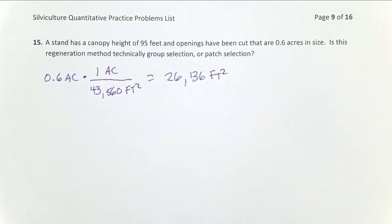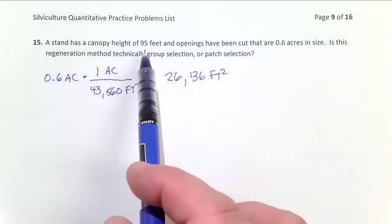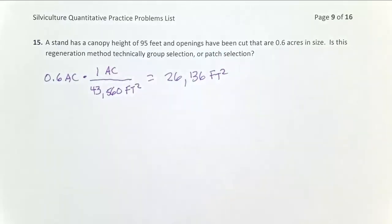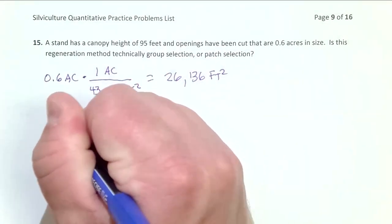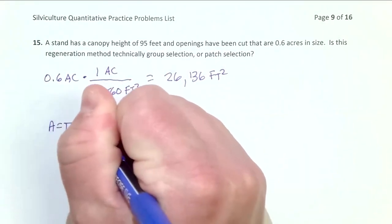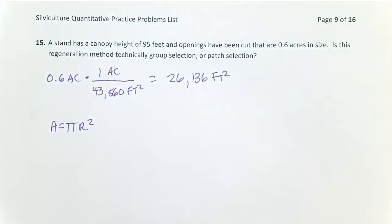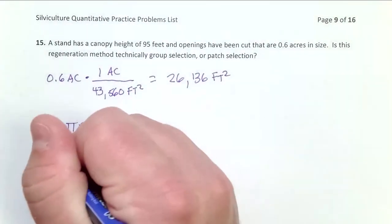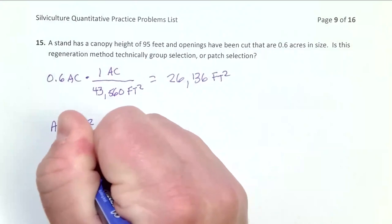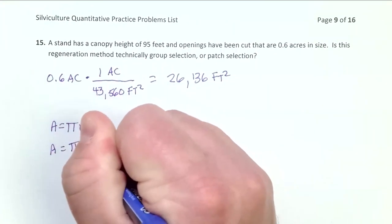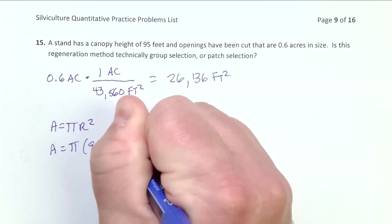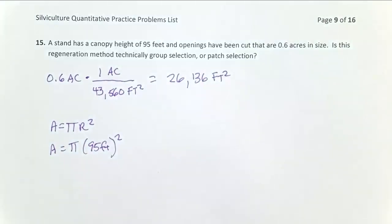I still don't know if it's group or patch selection, and so what I want to do now is figure out what my breakpoint opening size is. And so I'm going to use area equals pi r squared. And here I know my radius is 95 feet. So area equals pi times 95 feet squared, same as what we did on problem 14.